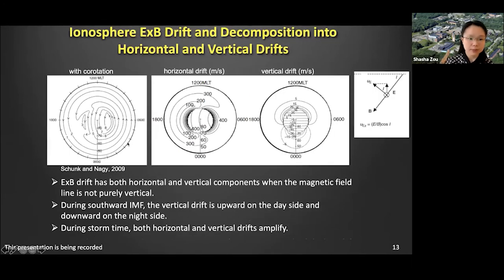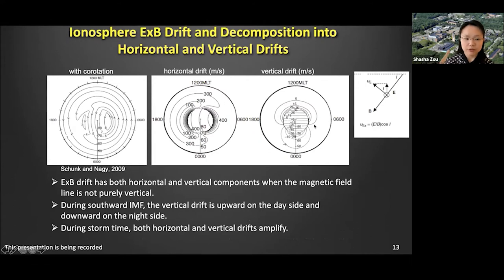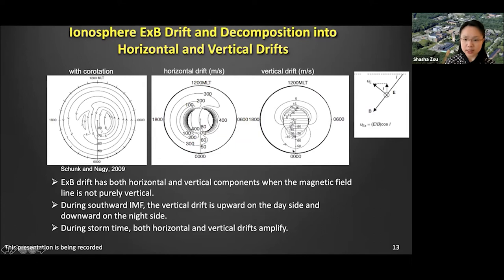We can further look at the convection impact. In the inertial reference frame, the convection flows together with co-rotation determine the plasma trajectories in the F region. Those trajectories can be separated into horizontal and vertical components — the vertical drift is more important here. When we have southward IMF, the vertical drift is in general upward on the dayside and downward on the nightside. This type of uplifting and descending force will enhance during geomagnetic storm time.